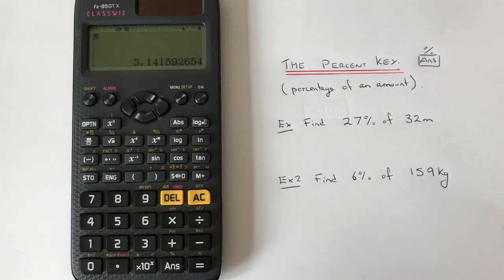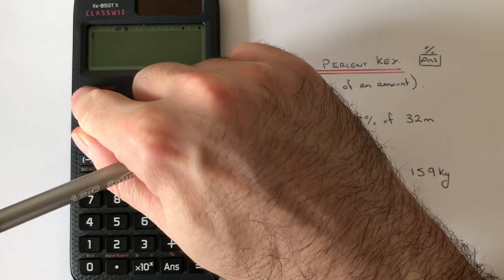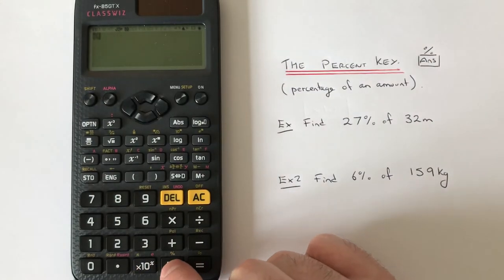Hi guys, welcome back. This is Maths 3000. Today I'm going to show you how to use the percent key on a Casio Classwiz scientific calculator to find a percentage of a number. The percent key is located on the second function of the answer key, so to get the percent you press Shift and then Ans.